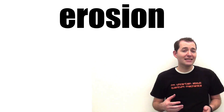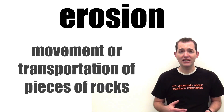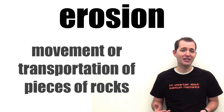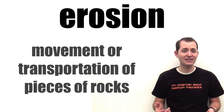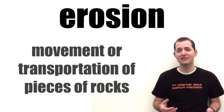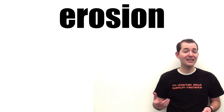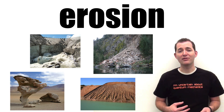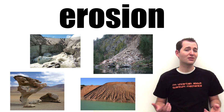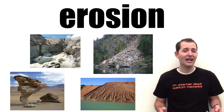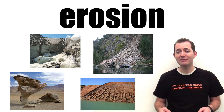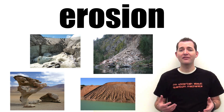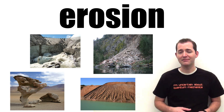The next step is erosion. Erosion is the movement or transportation of the pieces or clasts of rocks. Again, there are lots of ways that rocks can be moved, such as wind, water, ice, or gravity. These two steps — weathering and erosion — often take place at the same time.